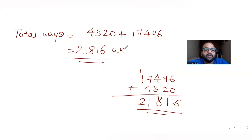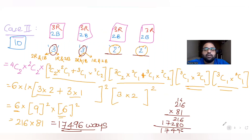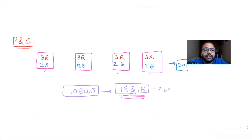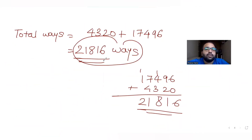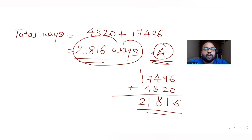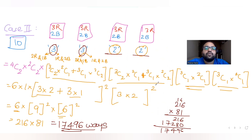So the total number of ways to select 10 balls out of 20 with the condition that at least one red and one blue ball is taken from each of the four boxes is 21,816 ways. This matches option A in the question. I hope you've understood how to solve these selection problems. I'll meet you tomorrow with the next question — please subscribe to my videos. Thank you!